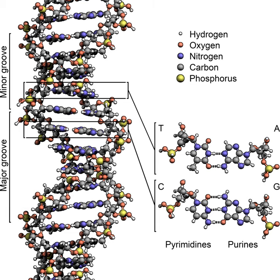Helicases are proteins that are a type of molecular motor. They use the chemical energy in adenosine triphosphate to break the hydrogen bonds between bases and unwind a DNA double helix into single strands. These enzymes are essential for most processes where enzymes need to access the DNA bases.